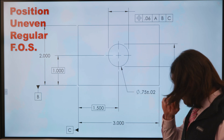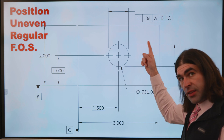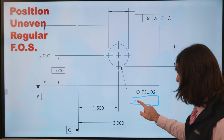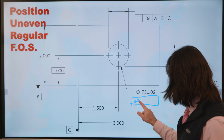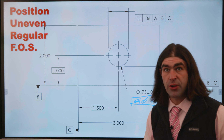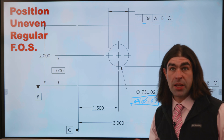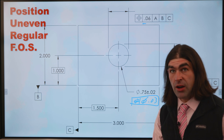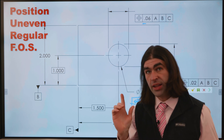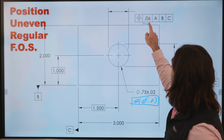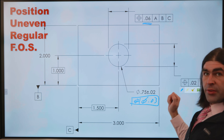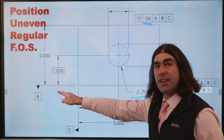As far as drawings go, the way you know it's not normal is the two feature control frames — the size dimension is left by itself. If the feature control frame was here, that's just a round tolerance zone; that's what the diameter symbol at the beginning of a position feature control frame tells you. Notice there's no diameter symbol here. So what this is telling us is we have a non-diameter, non-cylindrical tolerance zone. The tolerance zone in this case is going to be a rectangle — 60 thousandths wide left and right to datum C, and 20 thousandths wide up and down in reference to datum B.